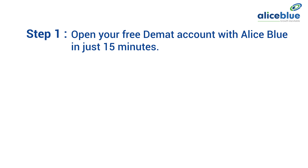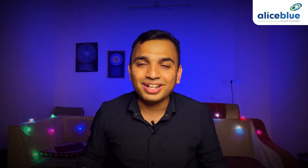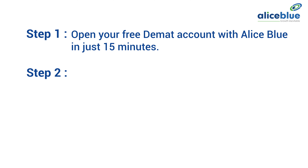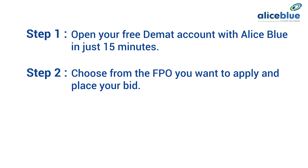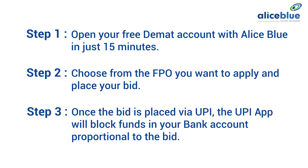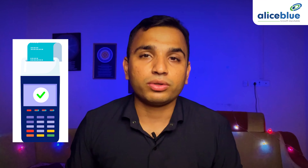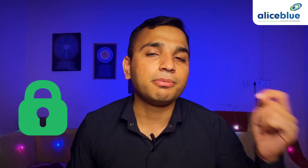Here is what you need to follow. Step 1: Open your free Demat account with Alice Blue in just 15 minutes. Already have an account? Then simply log on to Alice Blue IPO. Step 2: Choose the FPO you want to apply for and place your bid. Step 3: Once the bid is placed via UPI, the UPI app will block funds in your bank account proportional to the bid till the allotment date. If the shares are allotted to you, the money will be debited from your account. If not, the money will be unblocked.